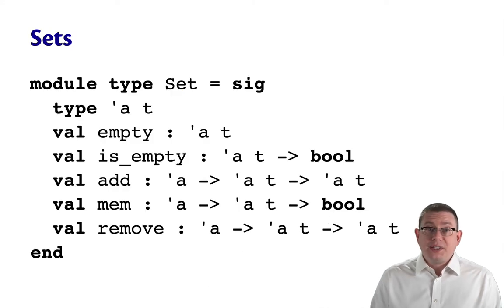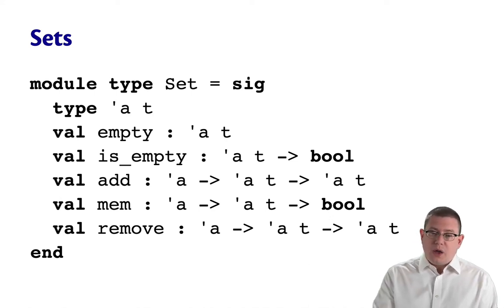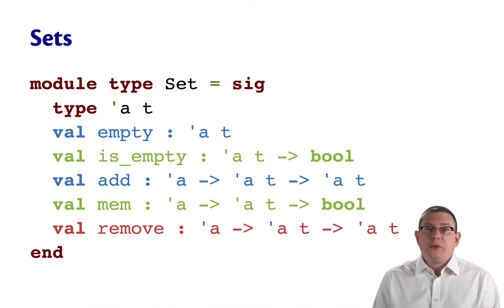Let me give you another example of that with a different data structure, a set. So here's a specification for sets or rather just a signature for it. We have empty, is_empty, add, mem, and remove. I could color code those as generators, manipulators, and queries. So empty and is_empty we've seen before.